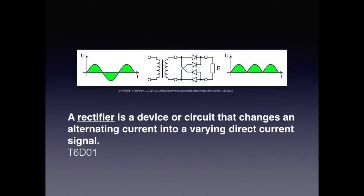The word rectify comes from the Latin word rectus, which means straight. For the purpose of electronics, to rectify or rectification means to convert alternating current, which is curved, to DC, which is straight. So rectify means make straight. For the exam, you need to know a rectifier is a device or circuit that changes an alternating current into a varying direct current signal.